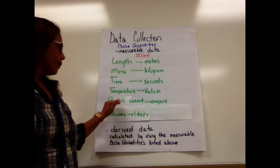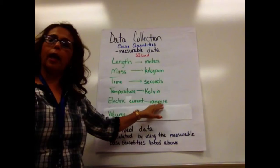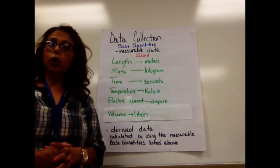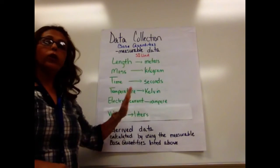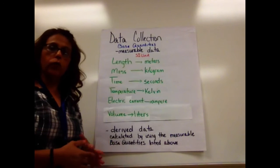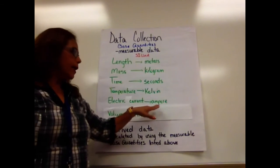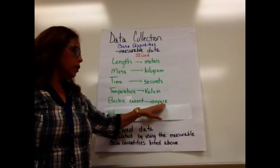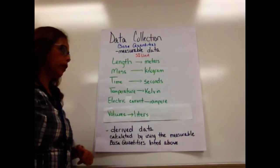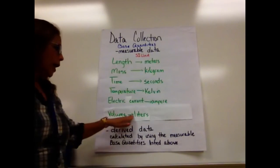Then we have electrical current, measured in what we call an ampere. Electrical current is a measurement we'll be looking at more next semester for the fields and electricity component of this course. It's a digital device that measures how much current is going through a system.